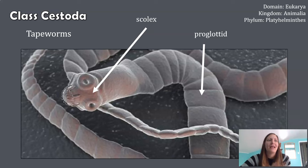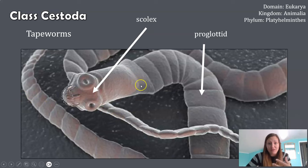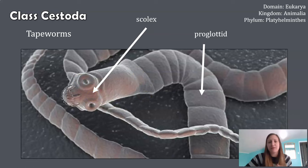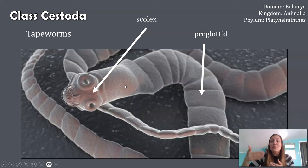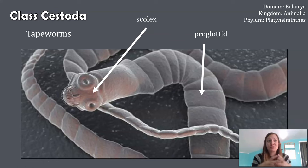Each proglottid is an egg-making factory, with the most mature proglottids found at the very end of the tapeworm. The tapeworm makes proglottids from the head region — the scolex is where it attaches to the intestine. The region right behind the scolex is where new proglottids are being formed, and at the very end of the tapeworm the proglottids have eggs that are ready to be released into the environment and hatch into larval form.